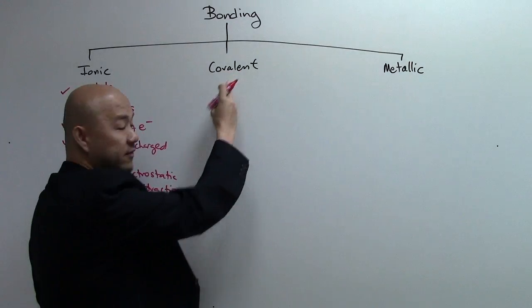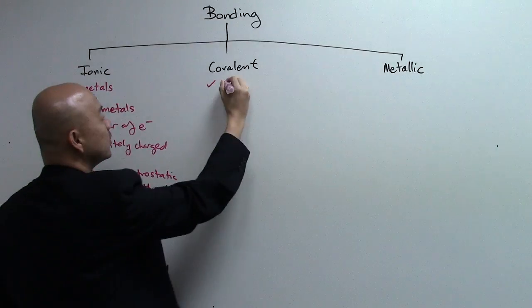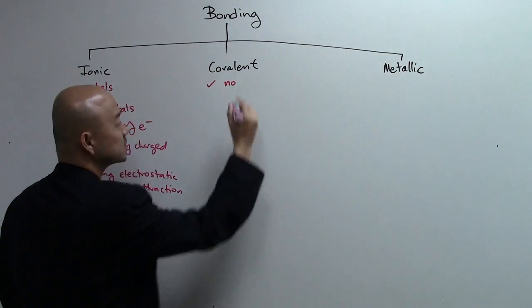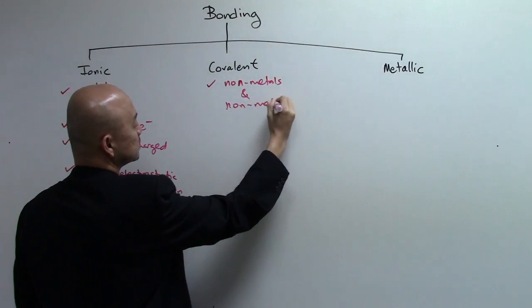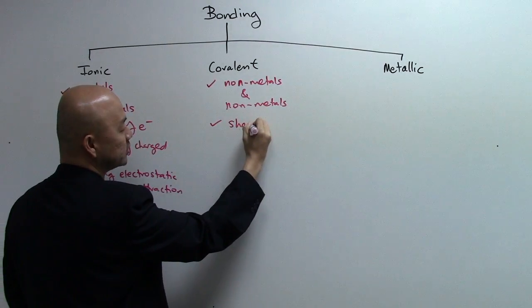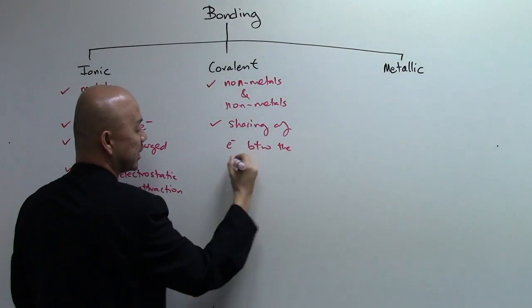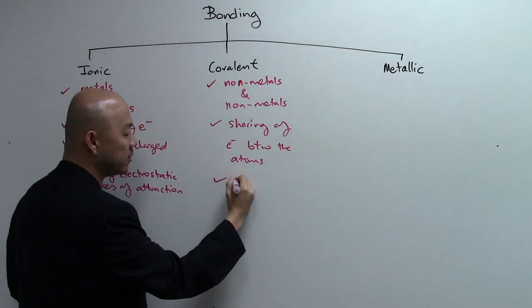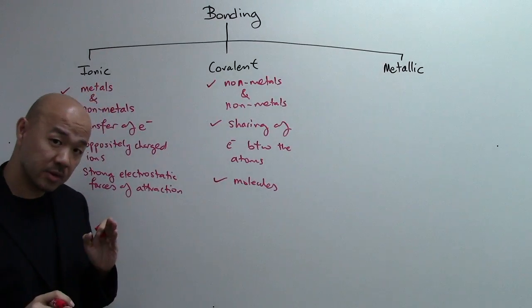Then you have your covalent bonding. Covalent bonding, they are formed between non-metals and non-metals. And they do so by sharing of electrons between the atoms that are involved. And after sharing, they'll form molecules. So these are the keywords associated with covalent bonding.